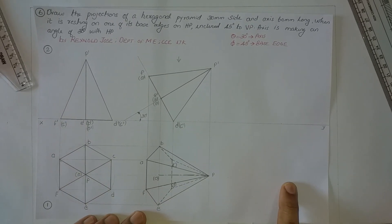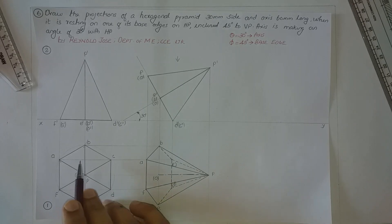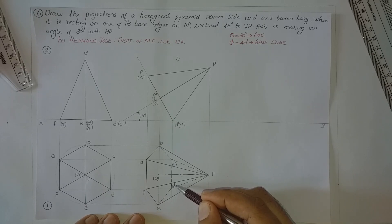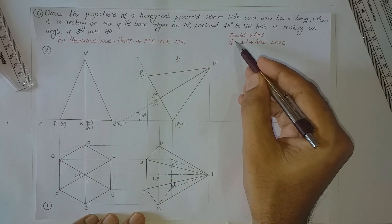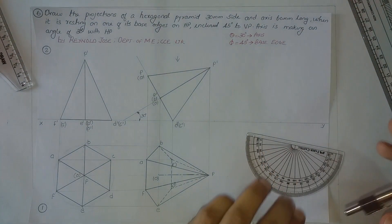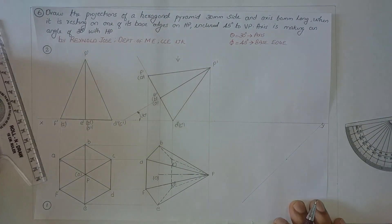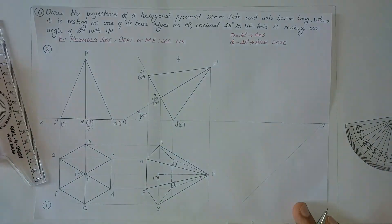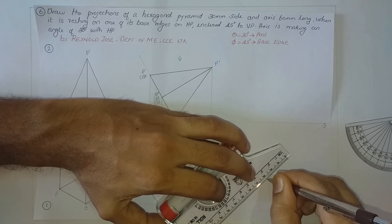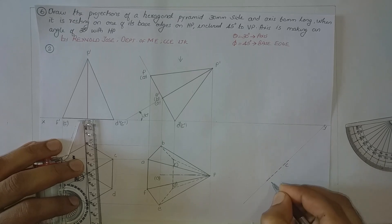We have reached diagram number 4. Now in order to get diagram number 5, we have to apply angle phi for the base edge. CD is the base edge on which this solid is presently resting. Since CD is resting on the horizontal plane, it will have its true length. We shall apply 45 degrees for this base edge, so we draw a 45-degree line on the right-hand side and fit CD onto this 45-degree line. CD is 30mm — its true length. So this point is C and this point is D, both invisible.